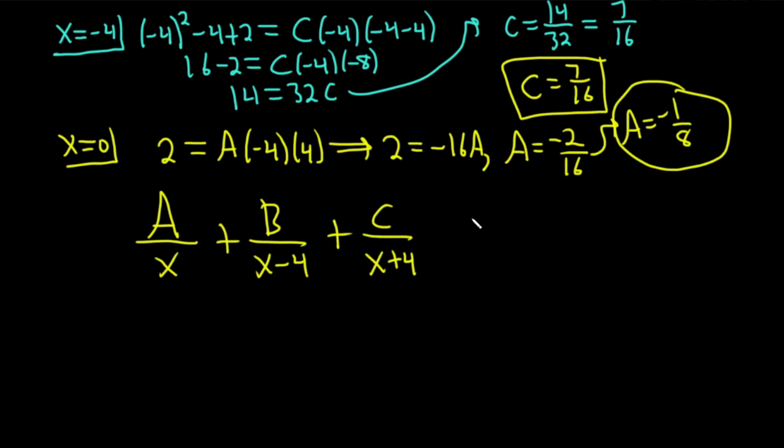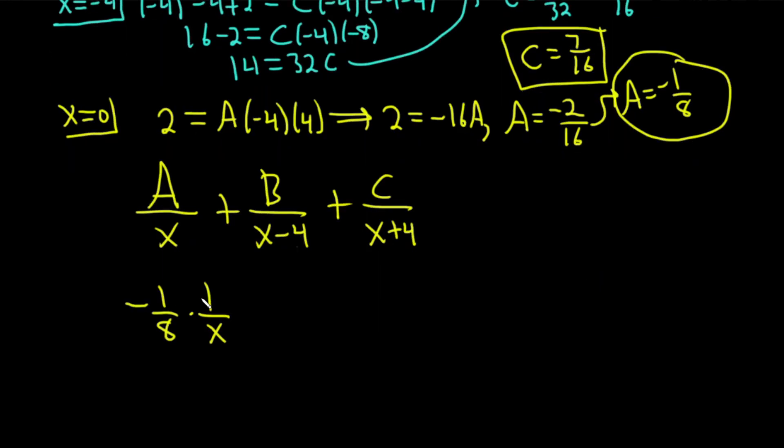And A is negative 1 eighth. So you get negative 1 eighth. But no one puts it in the top. What people do is they put it on the front like this: negative 1 eighth times 1 over x. And then B, B was 11 over 16. So instead of putting it up top, just put it in the front. So 11 over 16. It's the same thing algebraically. And then C was 7 sixteenths. So plus 7 sixteenths times 1 over x plus 4. And basically we're integrating all this. I'm just going to put parentheses around it. I'll put a dx here. And I'll put the integral sign.